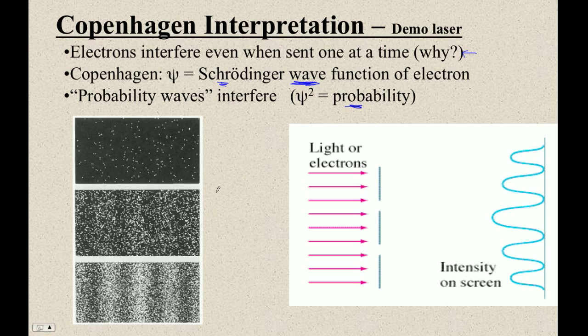And the way it works out is that an electron coming in has a particular probability of landing here. And here it's pretty high. Here it's low. Here it's high. Here it's low.